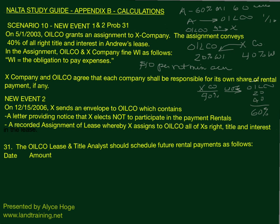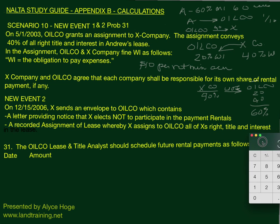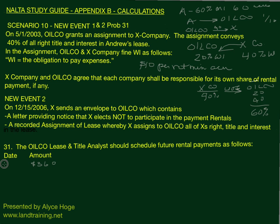So we calculate 60 acres times 0.60, which equals 36 net acres. We then multiply 36 net acres by $10 per acre, and the payment that Oilco is responsible for is $360. The date of this payment is going to be January 1st, 2007.